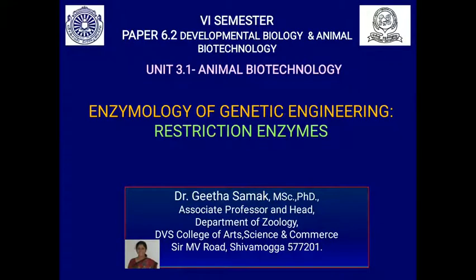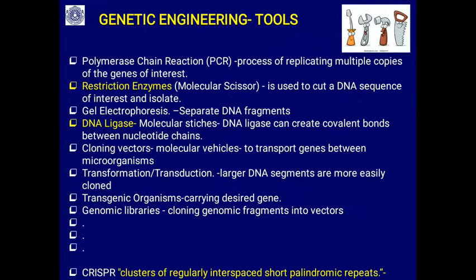Dear students, I am going to discuss the enzymes used in genetic engineering operations. The first are restriction endonucleases or restriction enzymes. In the last video I talked about the tools of genetic engineering: polymerase chain reaction, restriction enzymes, gel electrophoresis, DNA ligases, cloning vectors, and the newer addition, CRISPR technology.